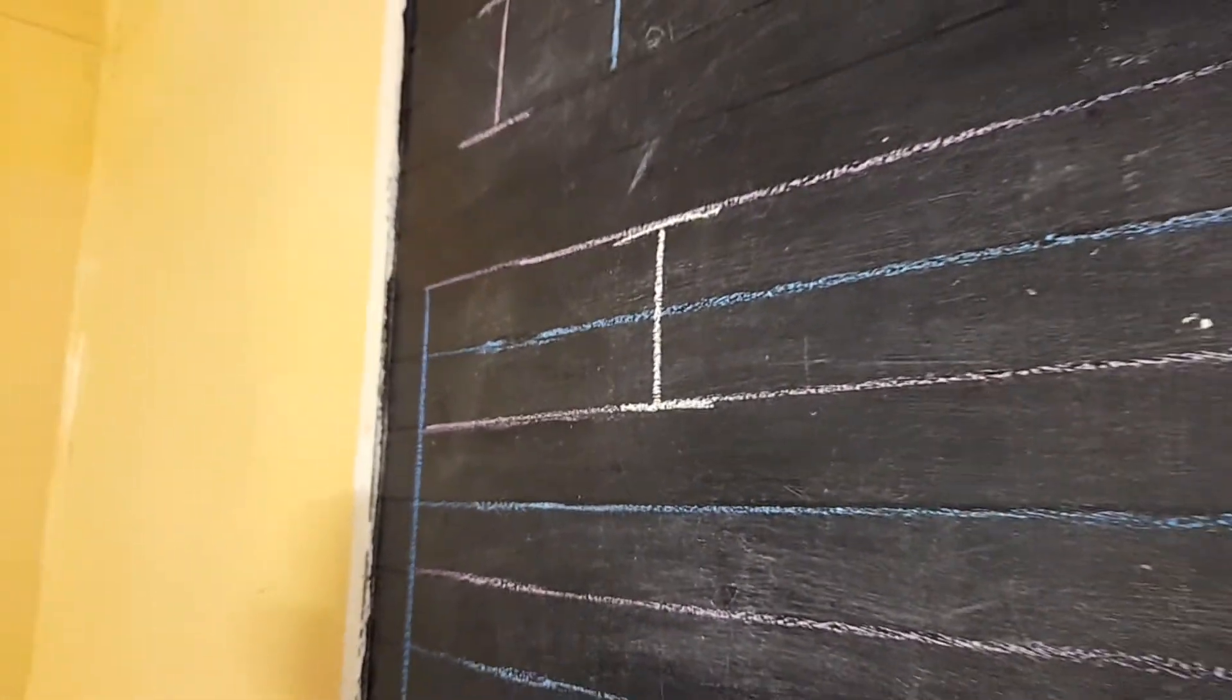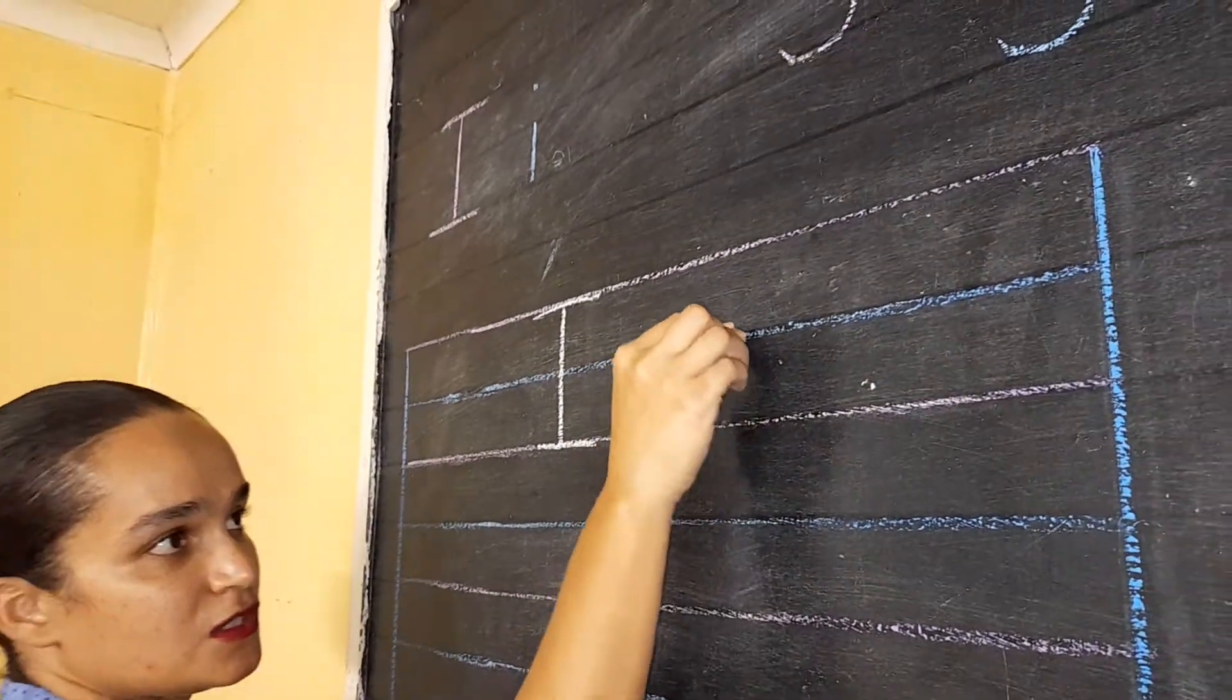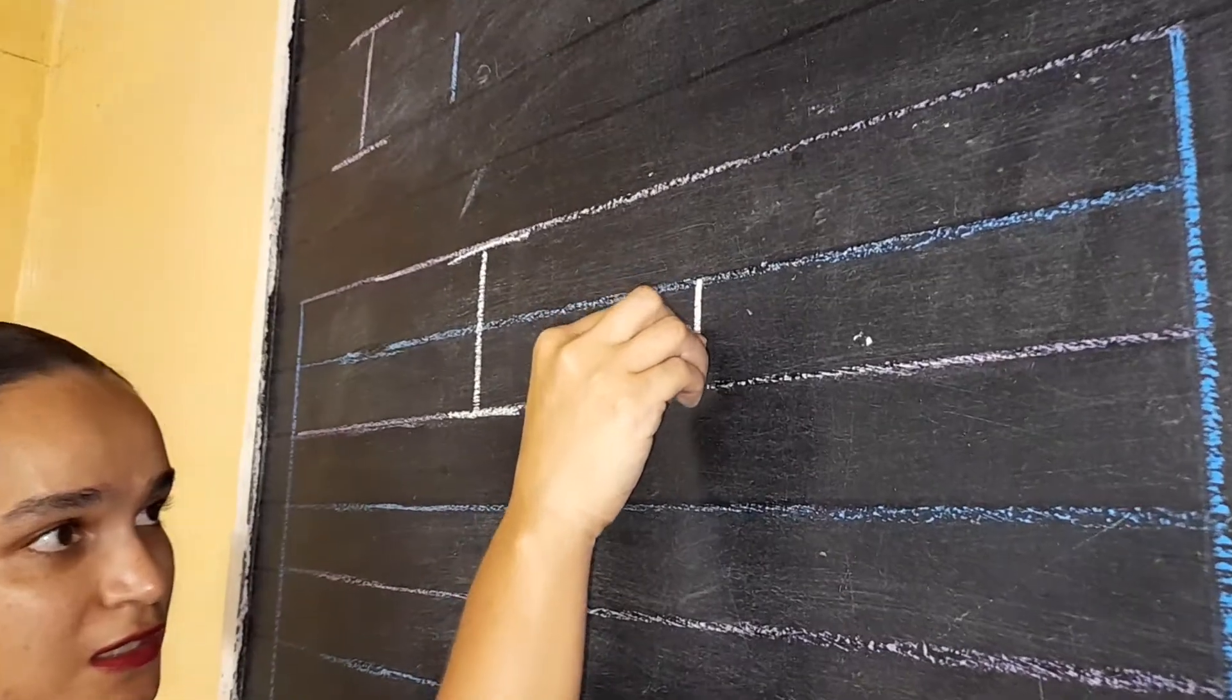How do we write small letter I? Very easy. From the middle, straight down and a dot. Don't forget the dot. The dot is very important.